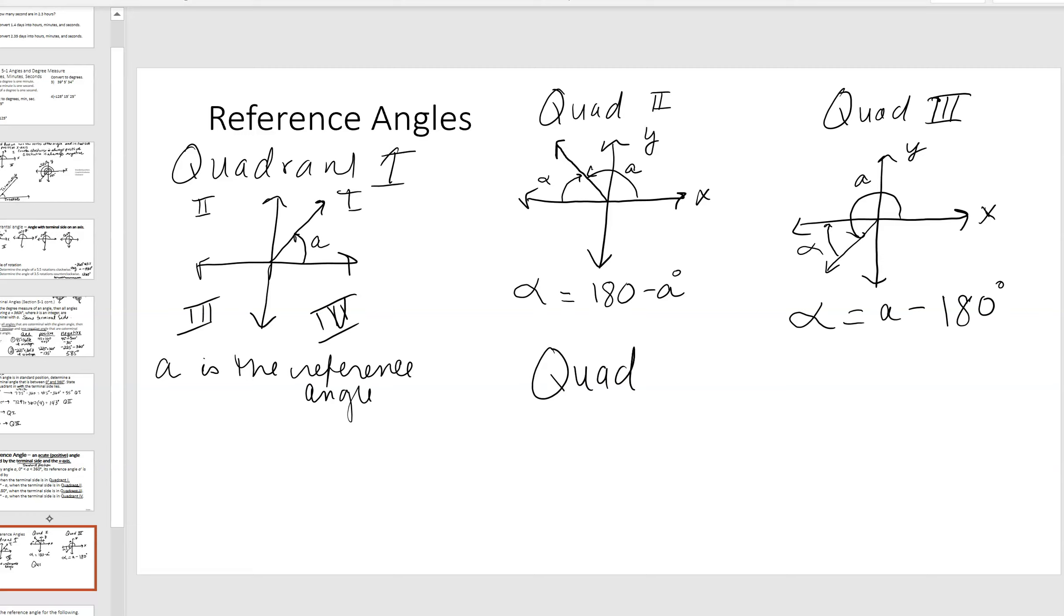So, then we have quadrant four. Here is your reference angle. Here's a. To find the reference angle, alpha, you're going to take 360 minus a.